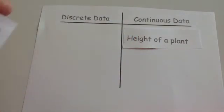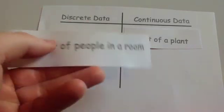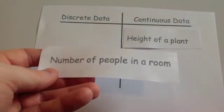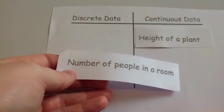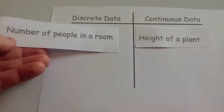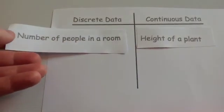The next one: the number of people in a room. Because it's countable and you can only take certain values, it's going to be discrete data.